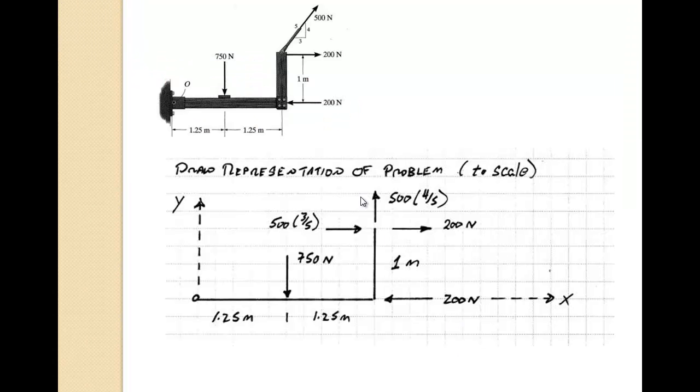So the first thing we want to do is draw a representation of the problem. I like to draw these to scale. So we have a 750 newton force in the negative y direction. You might notice that I put on an x and y axis. It's always good practice when you're drawing a figure. And I've taken the 500 newton force up here, which is directed at a 3-4-5 triangle, and broken it up into its positive x component and its positive y components.